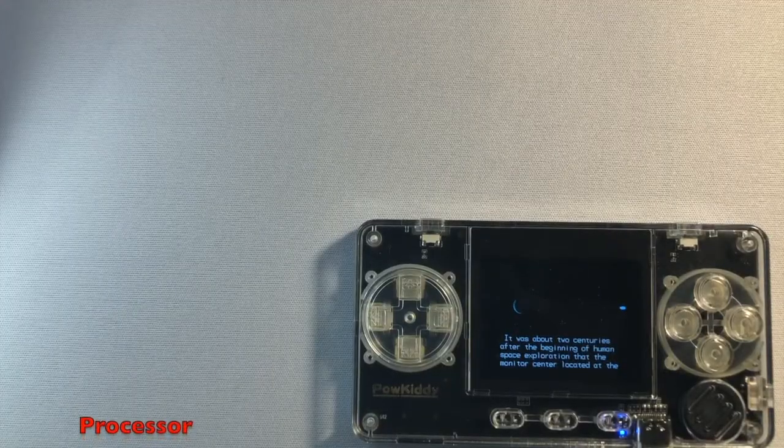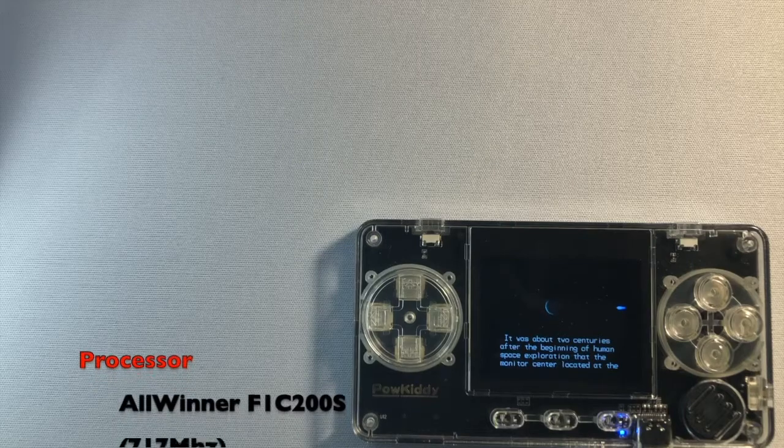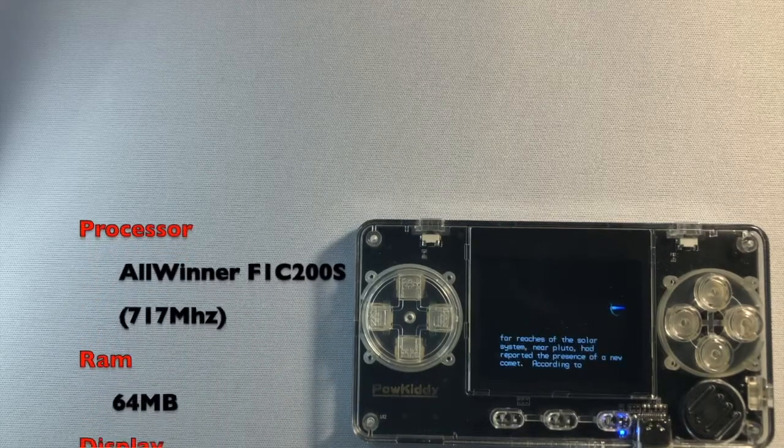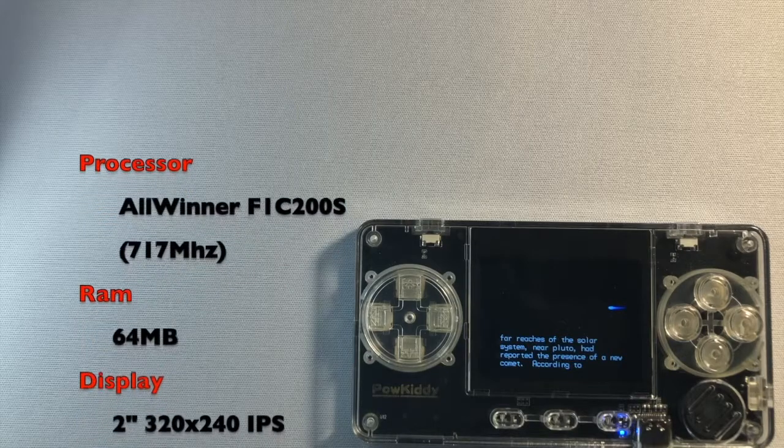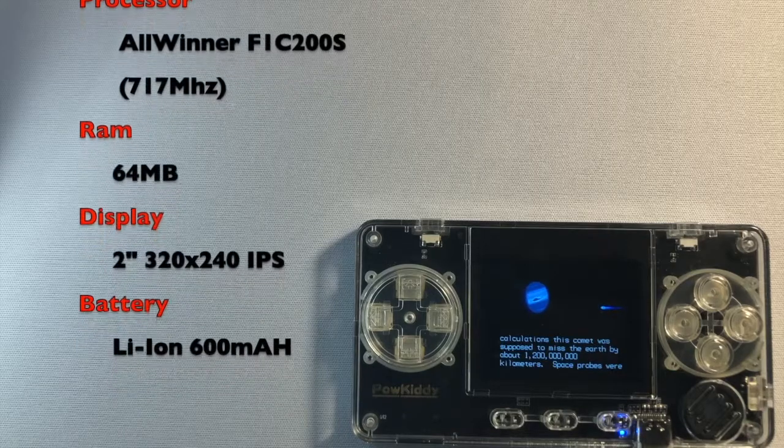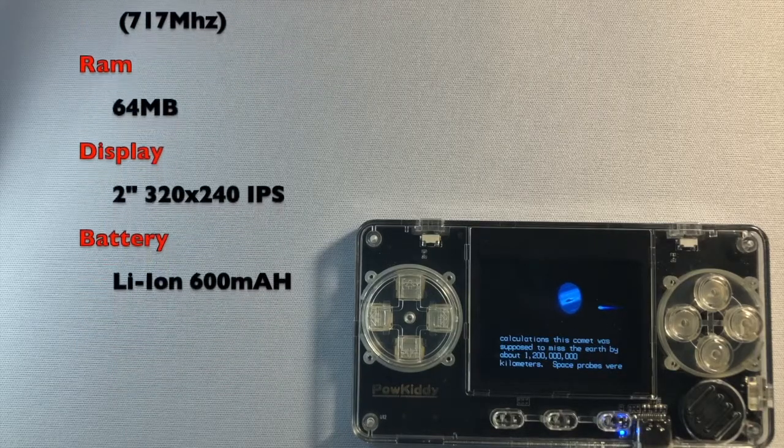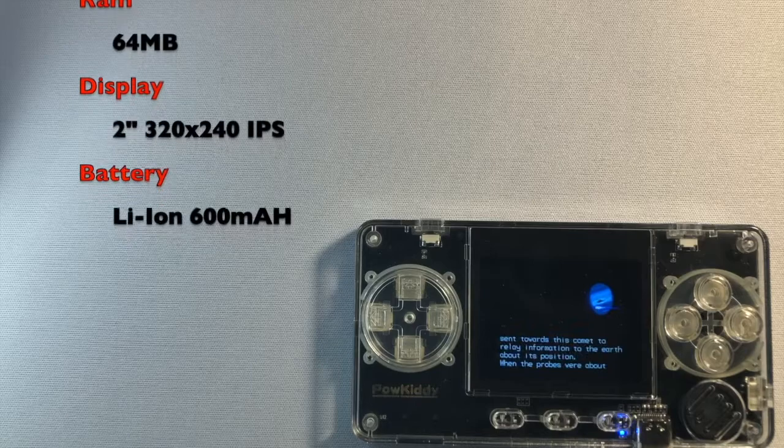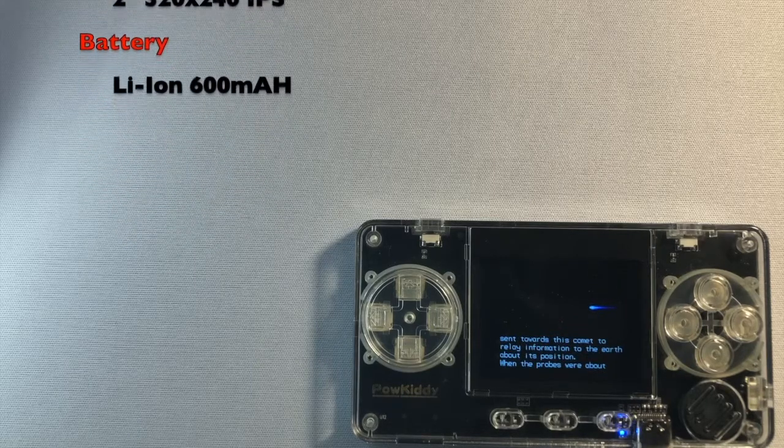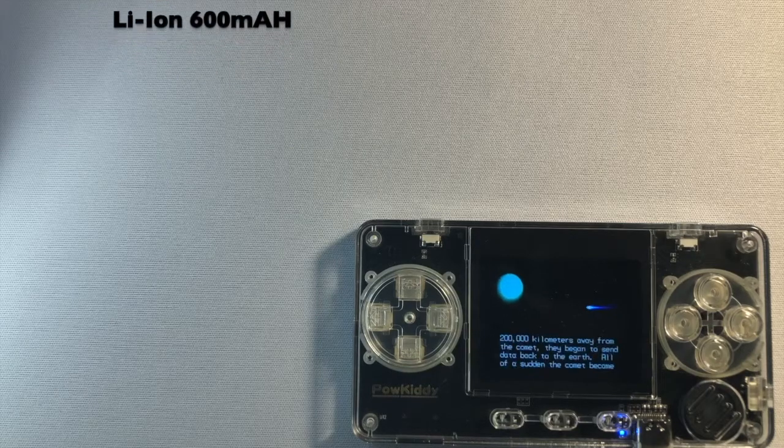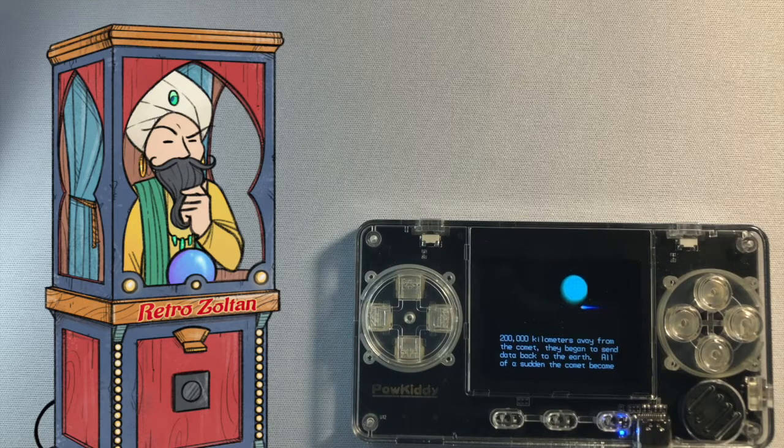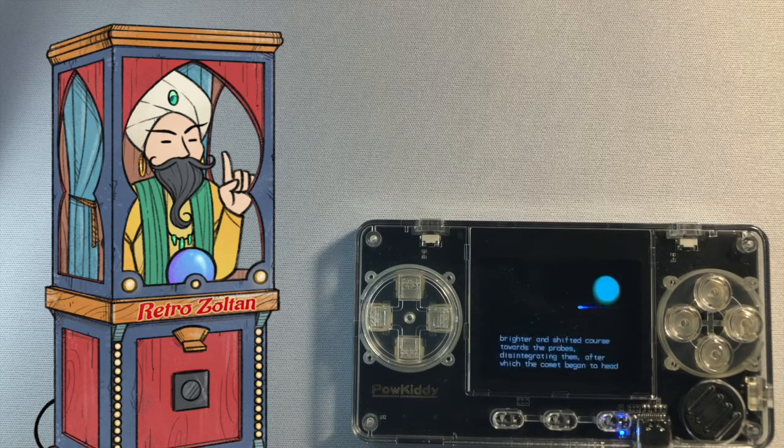The CPU is a whopping 717 megahertz. The RAM is 64 megabytes. It's got a two inch LCD. It's pretty small. It's IPS. It looks good. The battery is 600 milliamps, which is about like, I don't know, like three hours of playtime. That's what they say. I've used this a lot. I think it's even less than that. I've only gotten like maybe like a good two hours out of it, but I'm guessing it's depending on what you're doing.